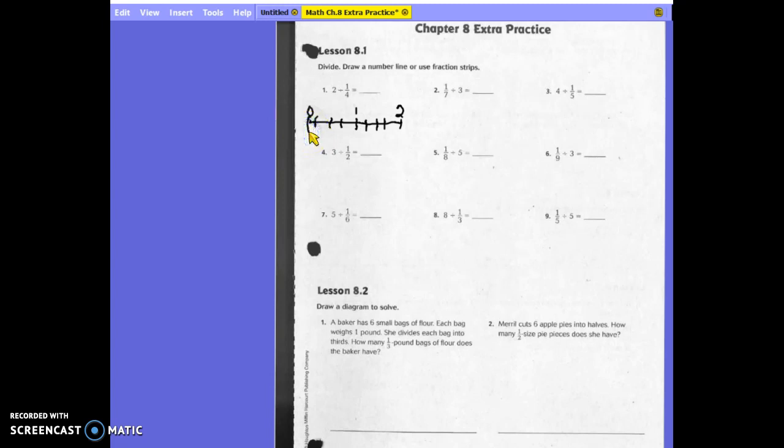So 2 divided into 1 fourth. How many 1 fourth pieces do we have there? 8.